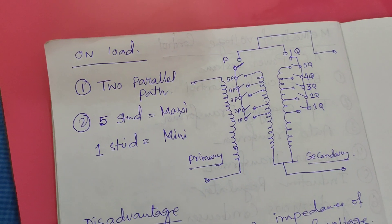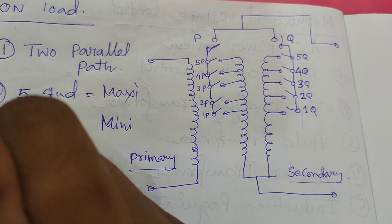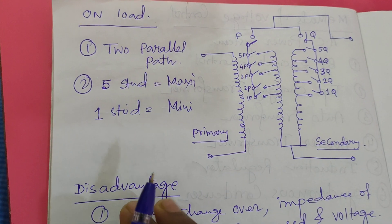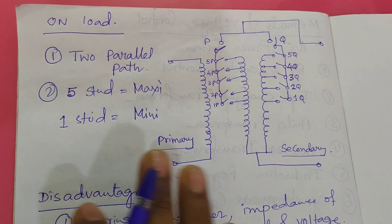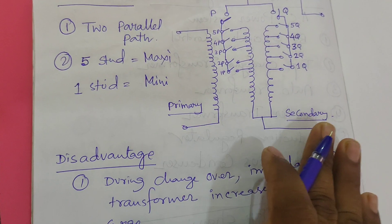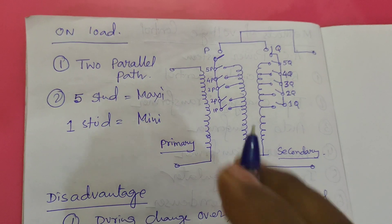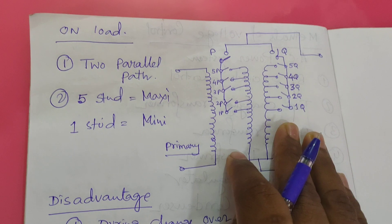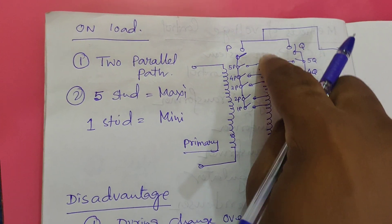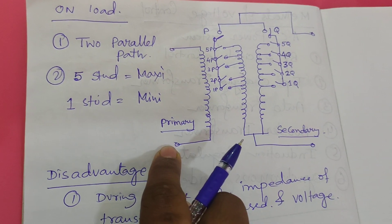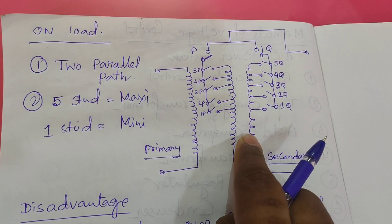Let us discuss the onload method. Onload means we change the tap while the load remains connected to the transformer. The onload tap changing process is the most beneficial and is used across the power industry — at generating stations, distribution ends, and transmission transformers. This process is very economical and does not require disconnecting any load during the tap changing procedure. The tapping is still situated at the secondary terminal of the transformer.